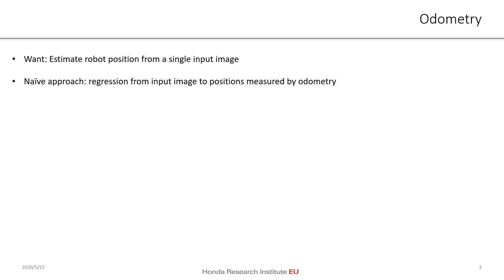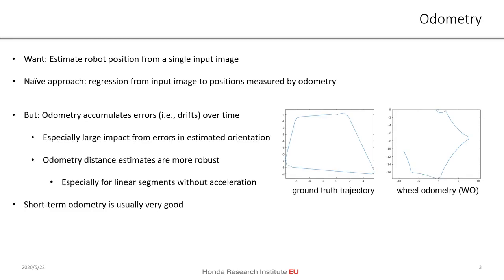When we want to estimate the robot position from a single input image, the naive approach would be to do a regression from each input image to the positions as measured by odometry. However, it's well known that odometry accumulates errors, so it drifts over time. That has an especially large impact for errors in estimated orientation. However, odometry distance estimates between any two points are more robust, especially for linear segments where no acceleration takes place.